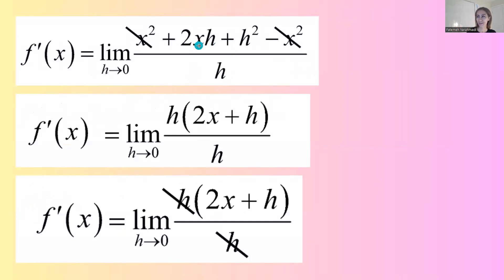So on the numerator, the first term has h, the second term also has h. We're going to factor out the common factor, which is h. You get the limit of h times 2x plus h divided by h.